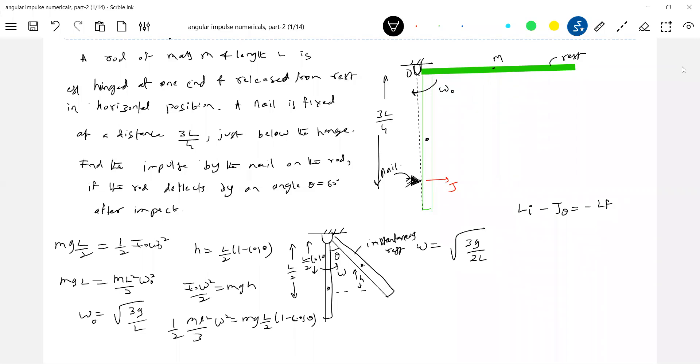Initial angular momentum was clockwise: I₀ω₀. Angular impulse: J × 3l/4. If you're finding it difficult, you can do one thing. Initial angular momentum like this, angular impulse acting like this, and final angular momentum is like this. Anything towards the direction of initial I'll take positive, opposite to that negative. This is the convention.